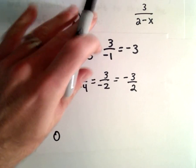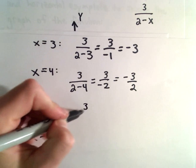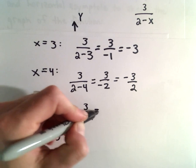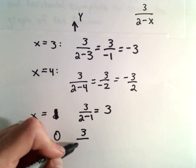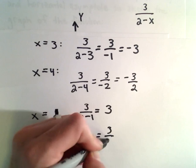Alright, so if we plug in x equals 1, we'll have 3 divided by 2 minus 1, which is going to give us 3. If we put in 0, we'll have 3 divided by 2 minus 0, which is 3 halves.